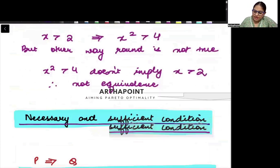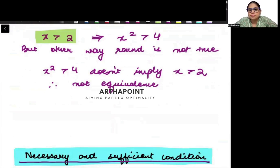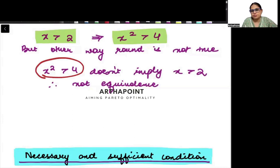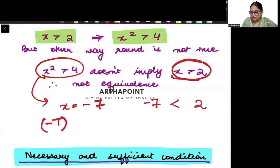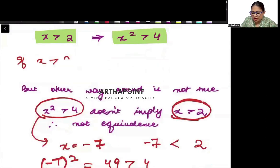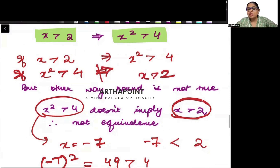Let's try to see it in the next statement, beta. What if x is minus 7? Minus 7 is less than 2. But minus 7 square, which is 49, is greater than 4. So I am saying that if x is greater than 2, then I am sure that when you will square it, you will get more than 4. But if the square is more than 4, it does not imply that the number has to be greater than 2. So if P then Q, but if Q may or may not be P, so yahan pe there is no equivalence.